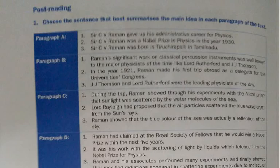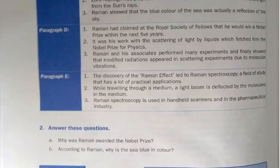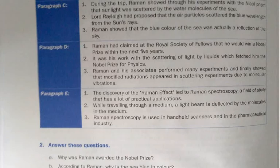Now we move on to paragraph D. Identify the main idea — read the paragraph and identify it. The answer for paragraph D is the second sentence: it was his work with the scattering of light by liquids which earned him the Nobel Prize for physics. That is the most important sentence and the main idea of that paragraph.